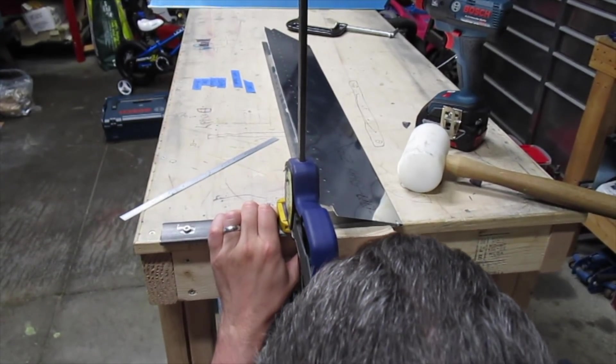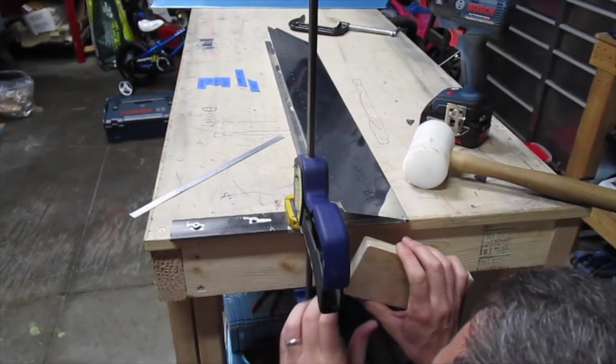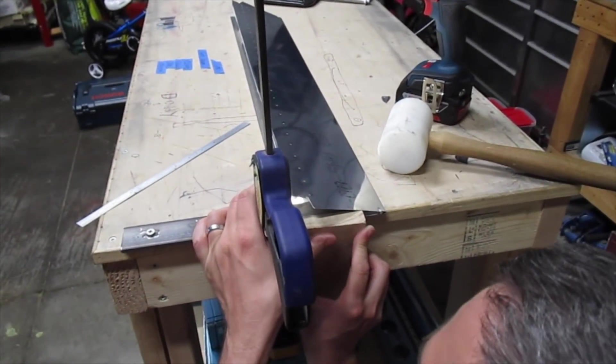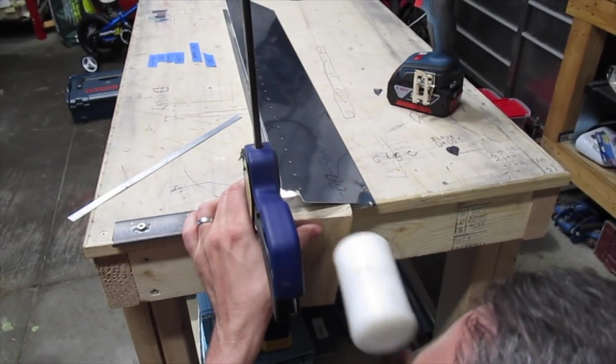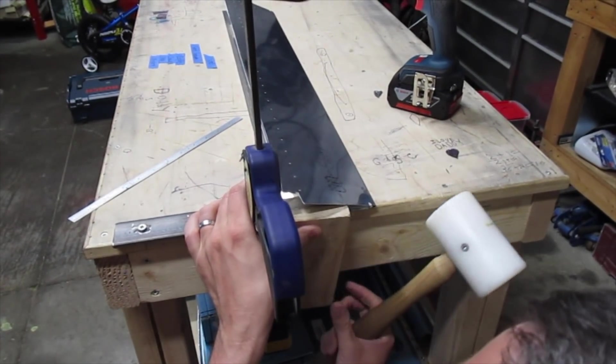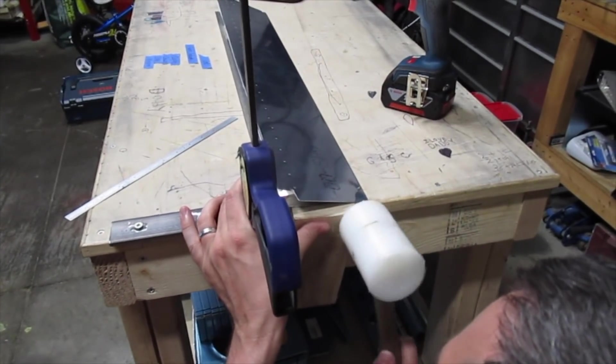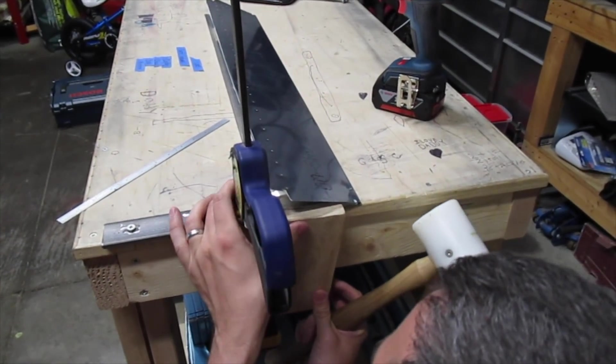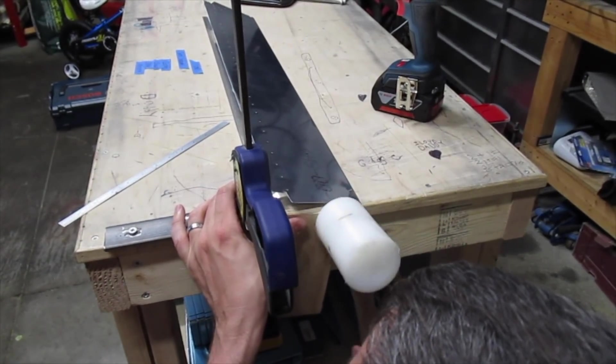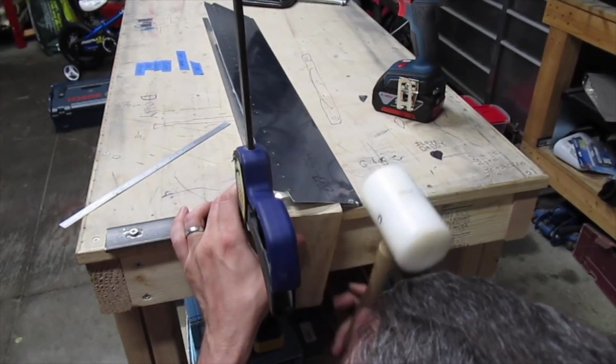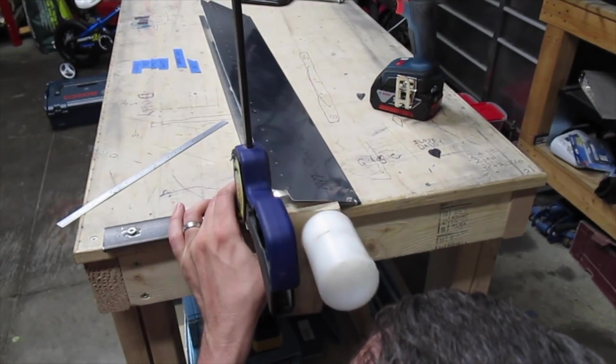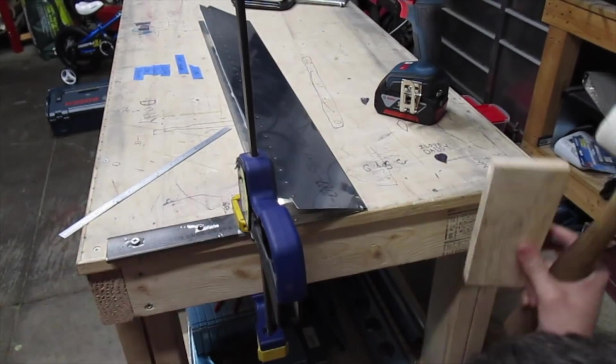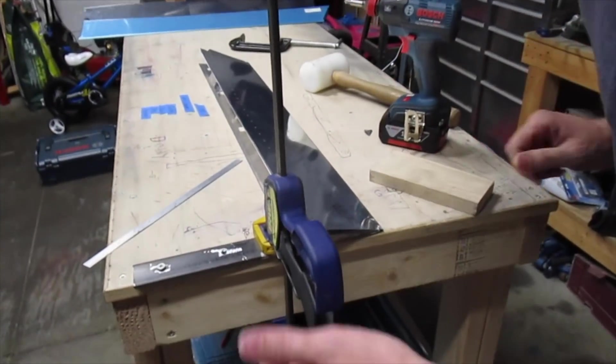Now I'm getting to the point where I can tap the wood with the hammer a little bit and that'll make the bend tighten up. Make sure we don't hit that top part. OK, let's take it out and we'll have a look at it.